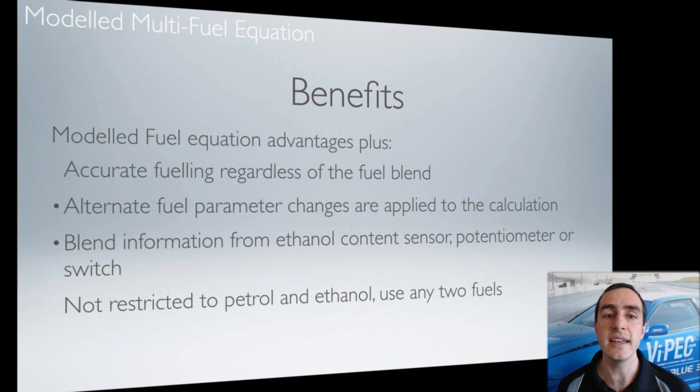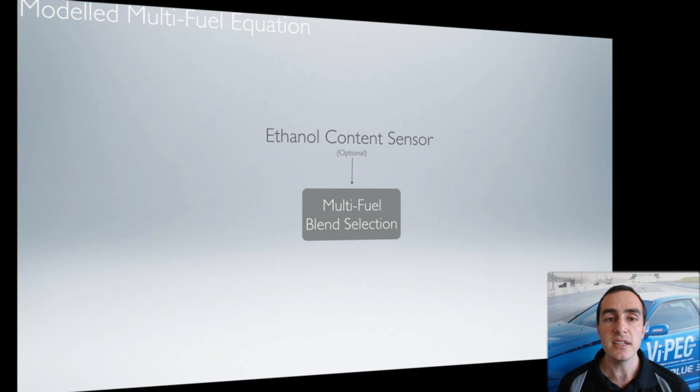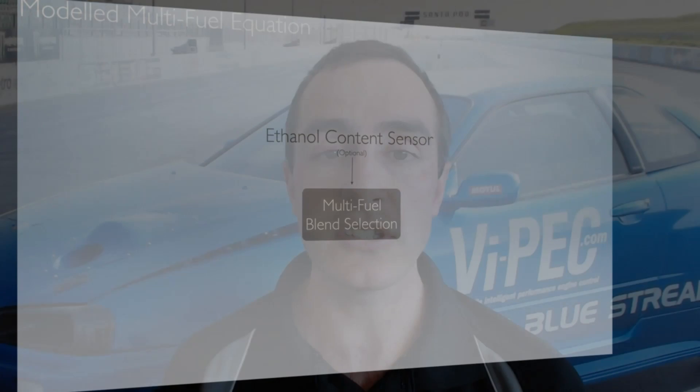Let's take a look at how the modelled multi-fuel equation works. The first thing it needs to know is what is the current blend of fuel. The most common and recommended way to do this is to use an ethanol content sensor. This is wired up to a digital input on the ECU, and it can tell the ECU anywhere from 0% up to 100% ethanol currently flowing through the fuel system.